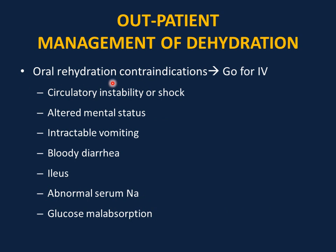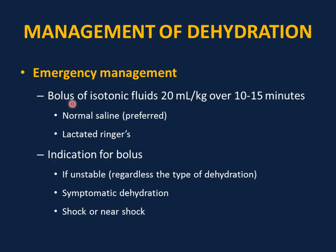Oral rehydration is contraindicated and IV fluid or hospital admission is needed in cases of: circulatory instability, hypotension or shock, altered mental status, intractable vomiting, bloody diarrhea, ileus, abnormal serum sodium (it is not appropriate to correct hyponatremia or hypernatremia with ORS), or glucose malabsorption. Management of severe dehydration requires a bolus of isotonic fluids — 20 ml per kg over 10–15 minutes — using normal saline, which is preferred over Lactated Ringer's because it is isotonic and does not contain potassium.